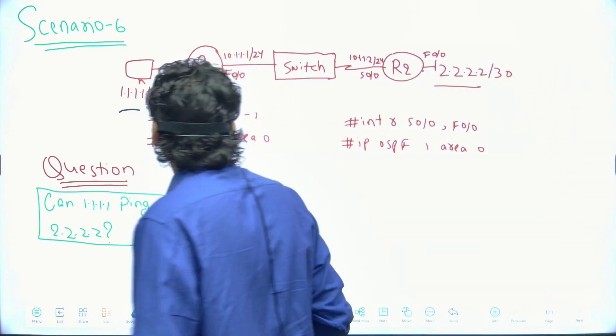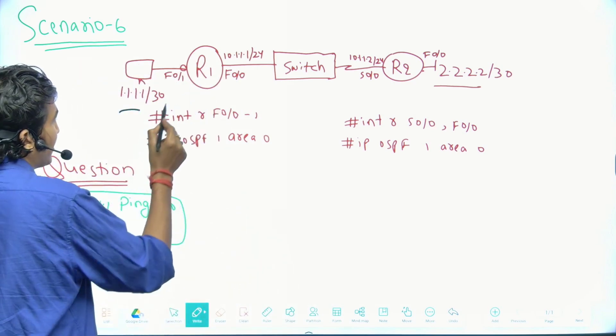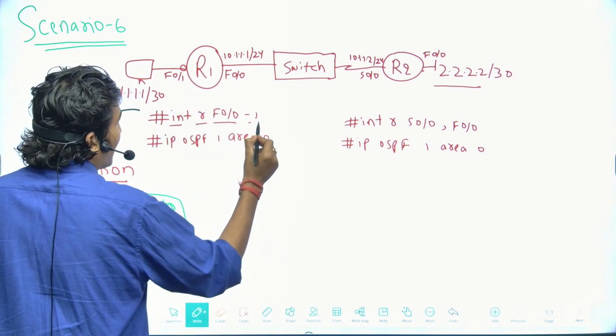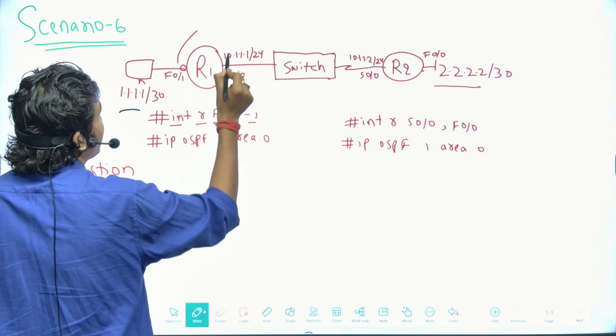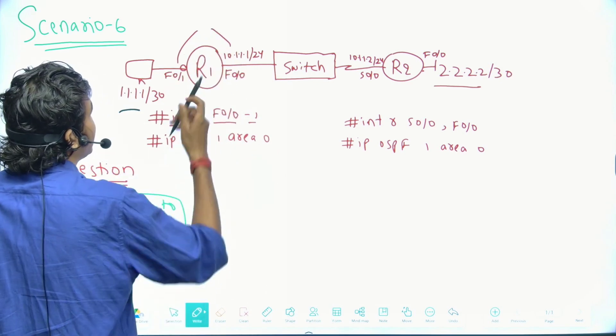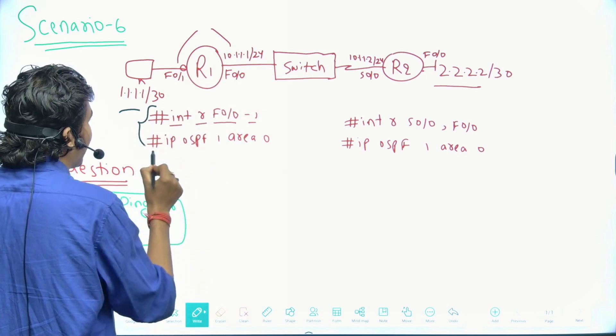And here are the commands you can see on router number one: interface range F0/0 to 1, right? Means this interface, this interface, this interface. IP OSPF 1 area 0. So these two commands are going to enable OSPF on these two interfaces of router 1.